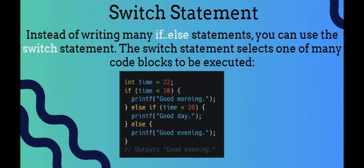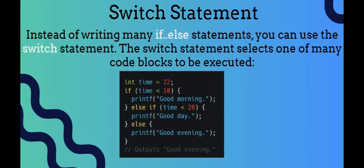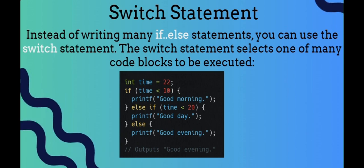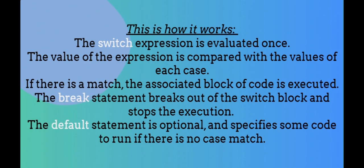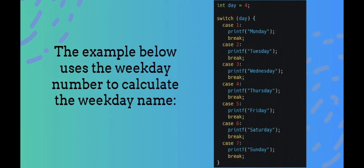Now, the switch statement. Instead of writing many if-else statements, you can use the switch statement. The switch statement selects one of many code blocks to be executed, like this syntax. This is how it works: the switch expression is evaluated once, the value of the expression is compared with the values of each case. If there is a match, the associated block of code is executed. The break statement breaks out of the switch block and stops the execution. The default statement is optional and specifies some code to run if there is no case match. The example below uses the weekday number to calculate the weekday name — the output here is Thursday, or day 4.